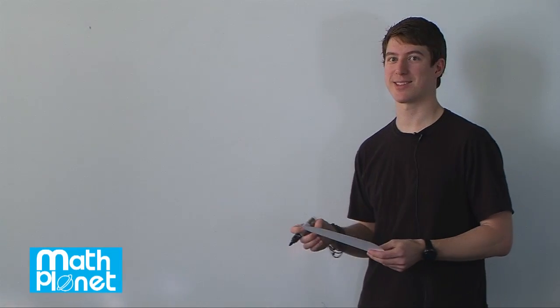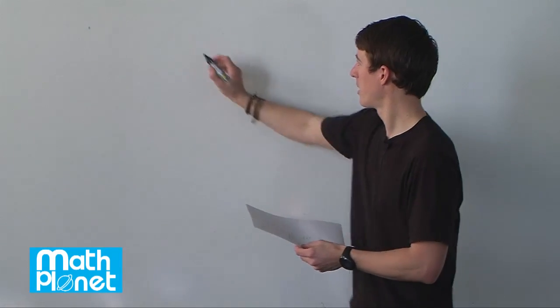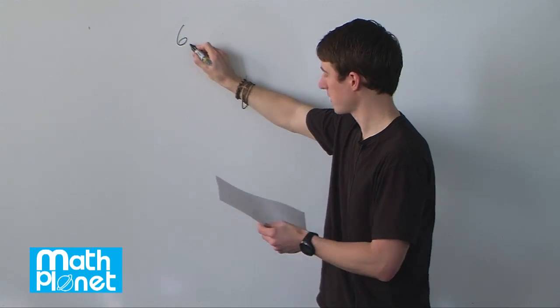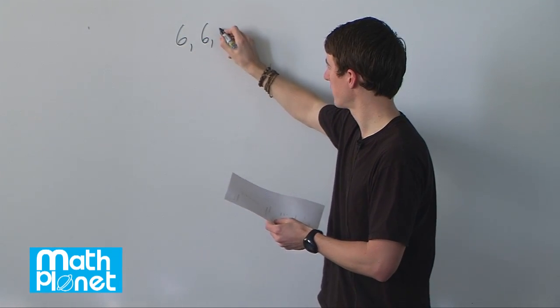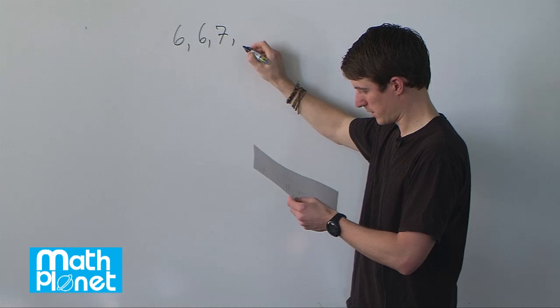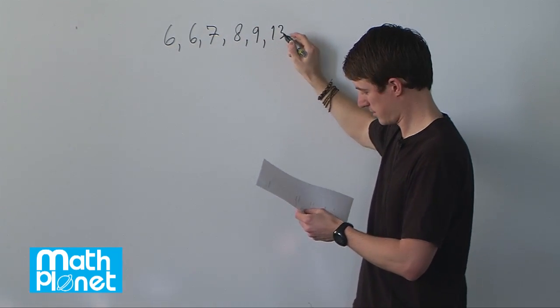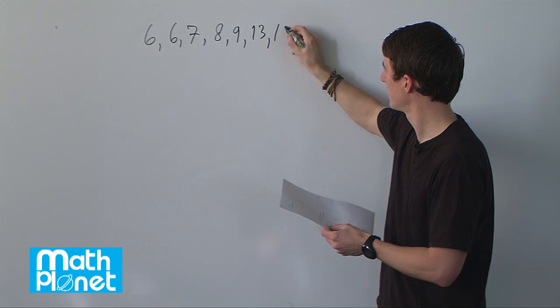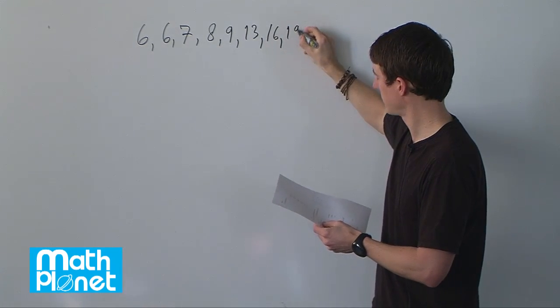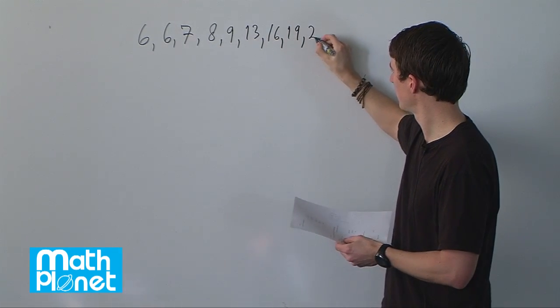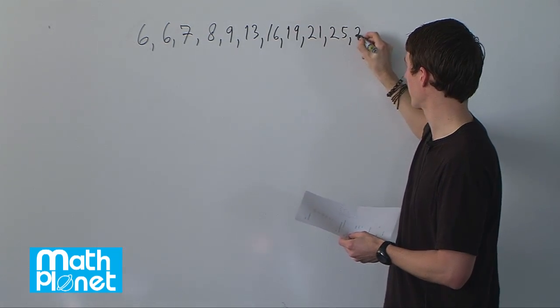Here we have a list of numbers and we want to complete a stem and leaf plot. The list of numbers are 6, 6, 7, 8, 9, 13, 16, 19, 21, 25, and 26.